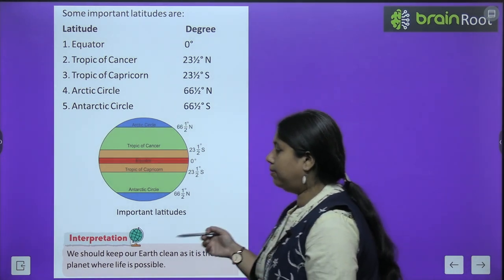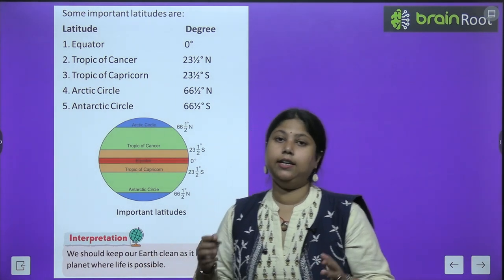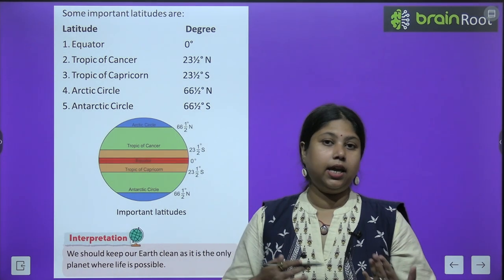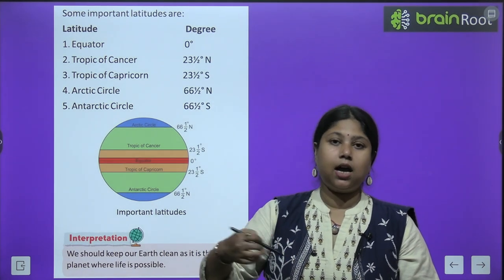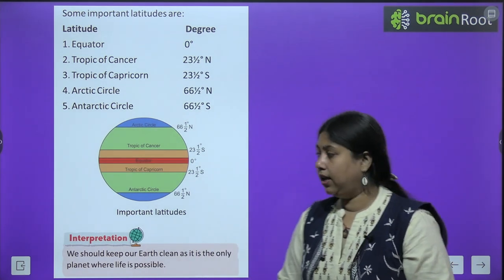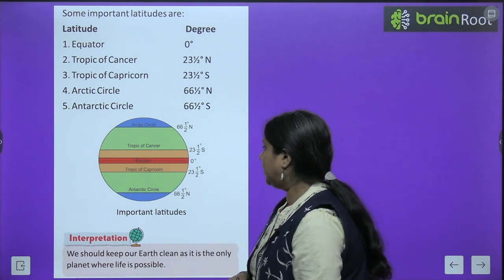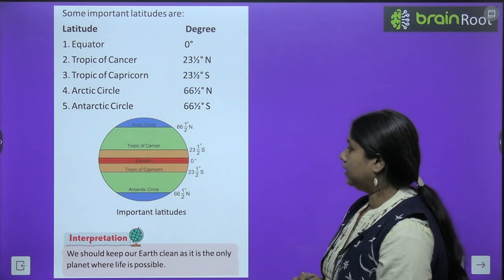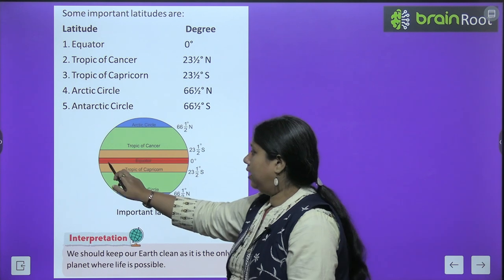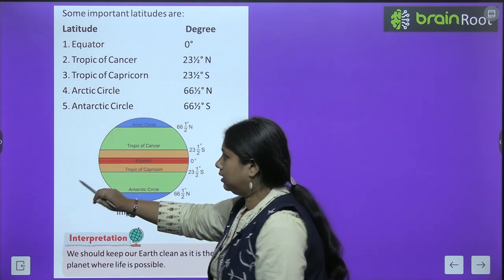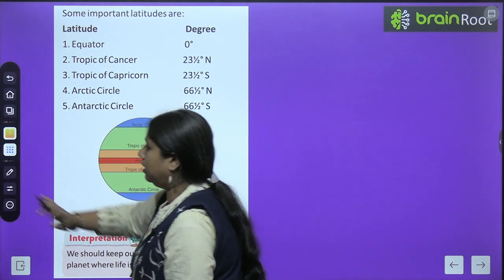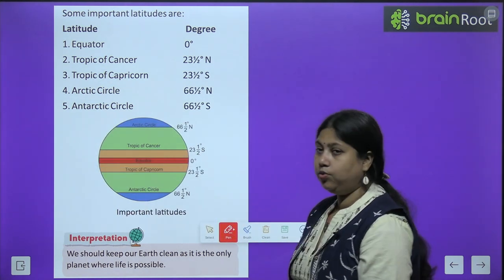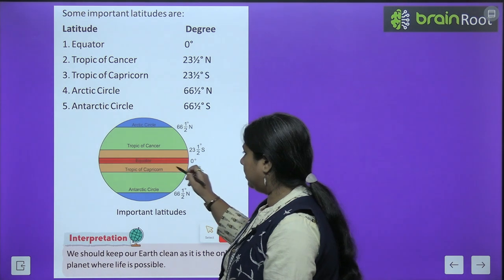Some important latitudes — ab latitude toh saare hi important hain, lekin kuch aise latitudes hain jo bahut zyada main hain, jinki help se hum baaki saare locations ko find out karte hain. These are the 5 major important latitudes. Sabse pehle aata hai hamara equator — bilkul Earth ke center mein. Equator ek aisa latitude hai jo ki Earth ko aadhe hisse mein baant deta hai.